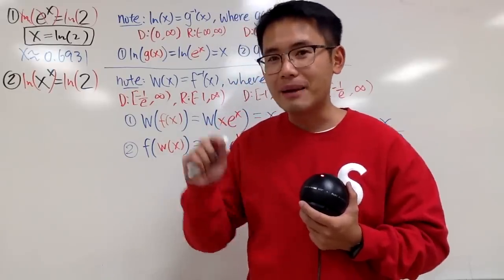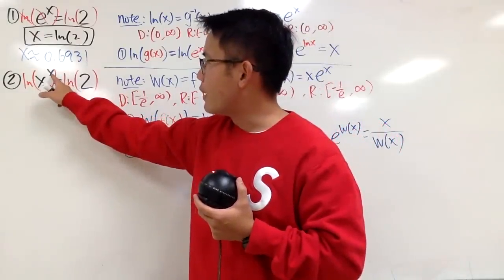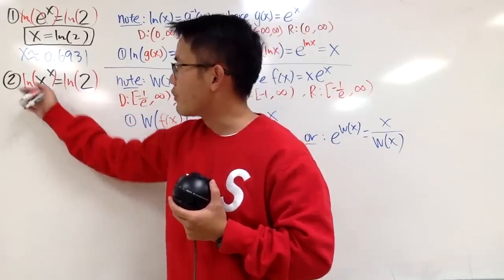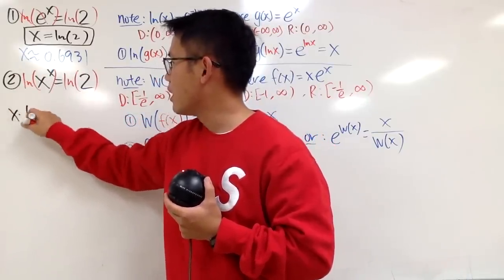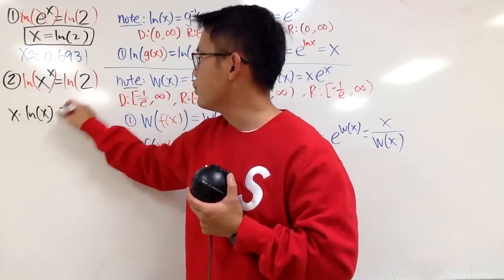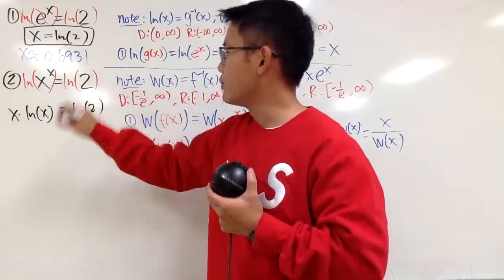But, don't forget, we have that property of ln. When we have a power inside here, we can bring the power to the front. So, we get x times natural log of x, and this is equal to natural log of 2, like that.